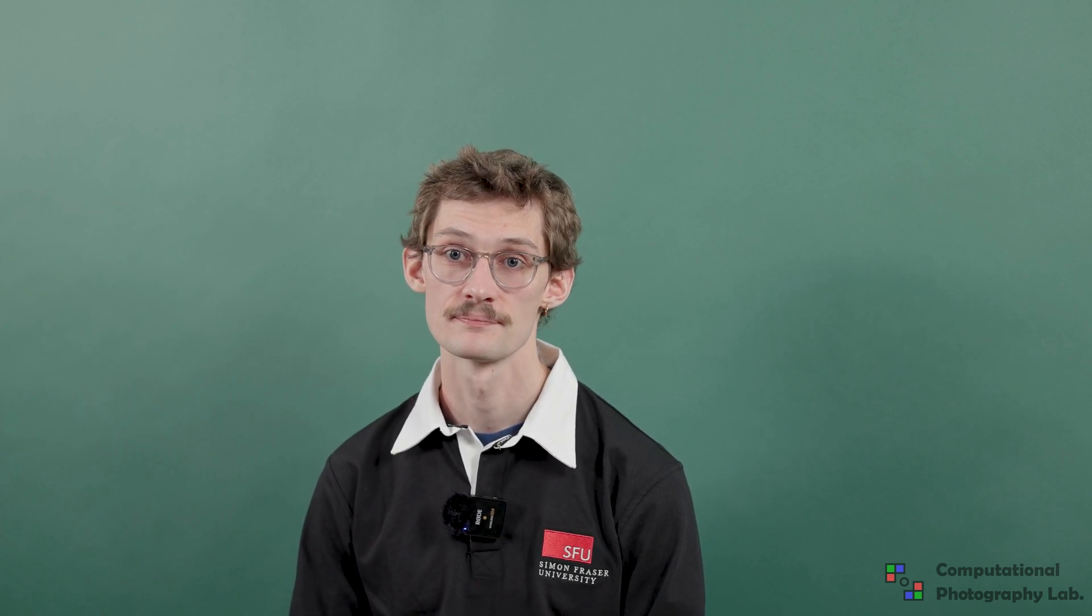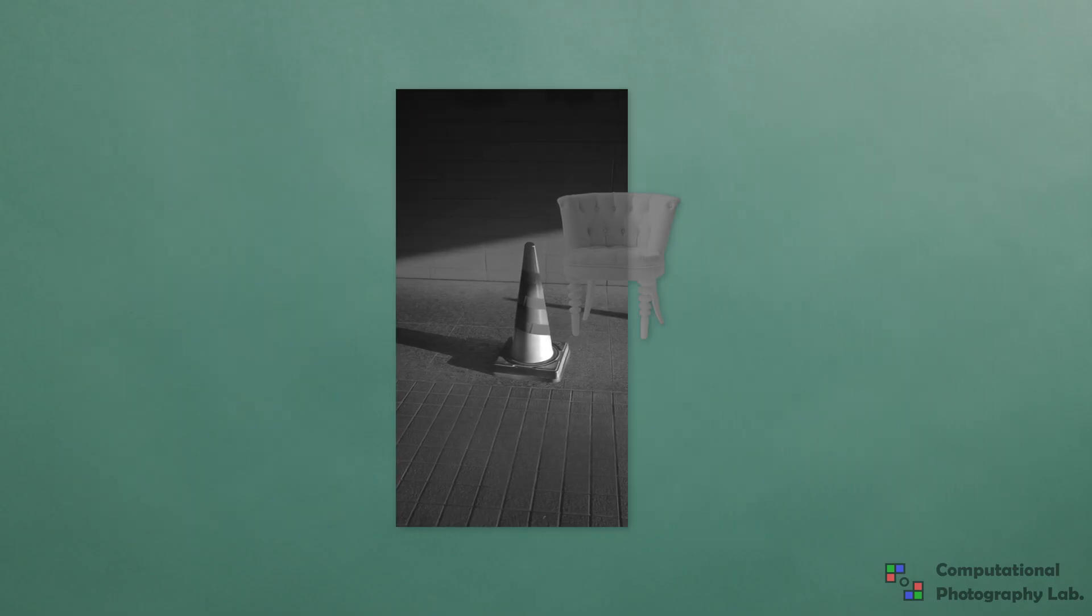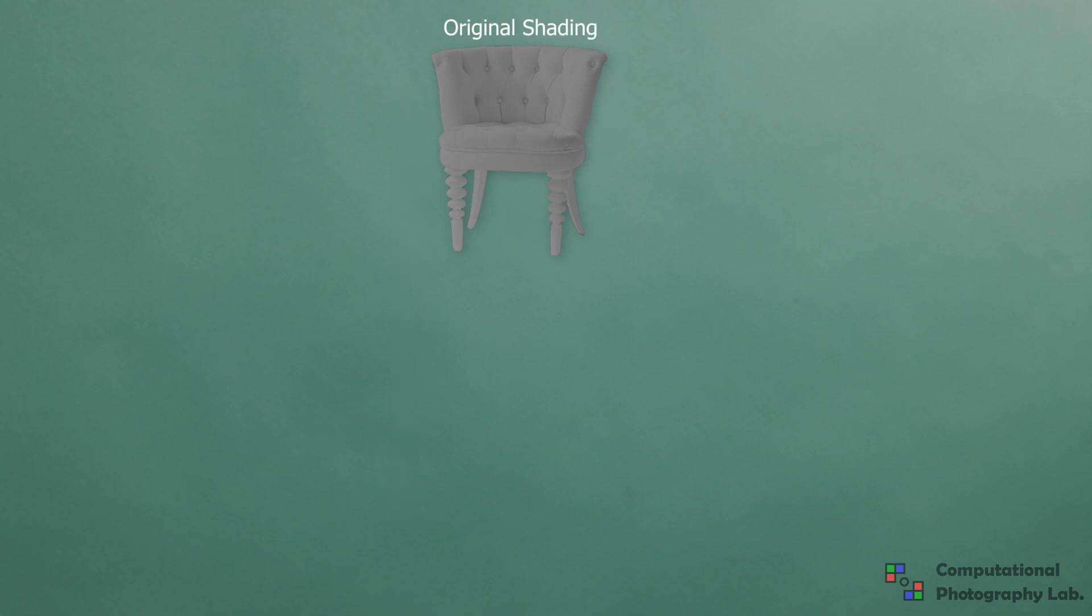Existing methods formulate relighting as an image-to-image problem which lacks real-world datasets. In this work, we simplify relighting into a shading refinement problem, where our network generates a realistic shading for the foreground using a physically motivated starting point.